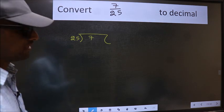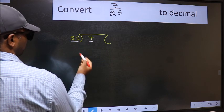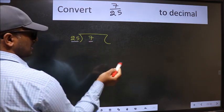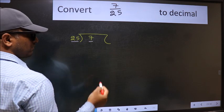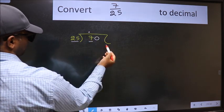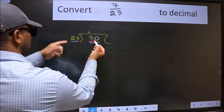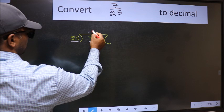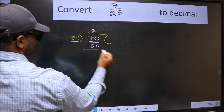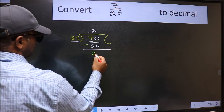Next, here we have 7 and here 25. 7 is smaller than 25, so what we should do is put a dot and take 0. So 70. A number close to 70 in the 25 table is 25 times 2 = 50. Now we should subtract. We get 20.